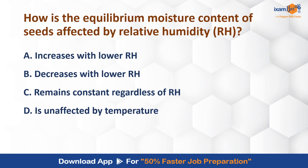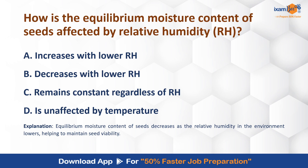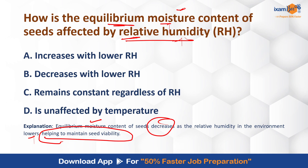What is equilibrium moisture content of seed, and what is it affected by? Equilibrium moisture content is the moisture content related to the environment, helping in maintaining seed viability. The equilibrium moisture content of seed decreases as the relative humidity in the environment decreases — meaning the quality of the storage environment and its humidity directly affects the seed's moisture level.